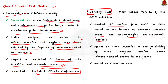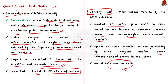The most recent version of the Global Climate Risk Index was released in January 2021, ranking 180 nations from 2000 to 2019 based on the impact of extreme weather conditions and accompanying socioeconomic statistics. This index makes clear that we can no longer afford to ignore the consequences of accelerating climate change in any continent or region. The rankings alert countries about the possibility of more frequent or severe climate-related events in the future, based on historical data.